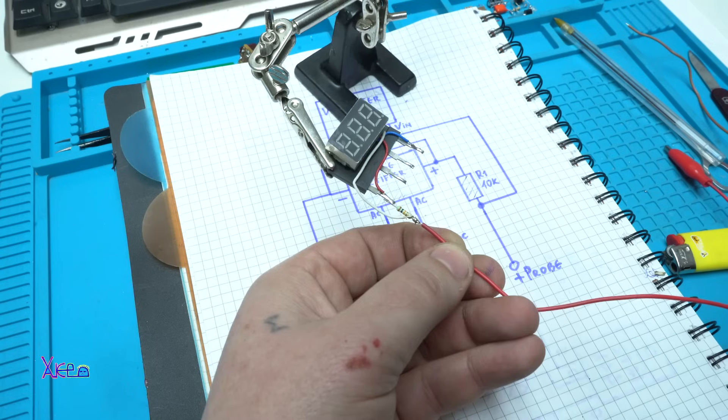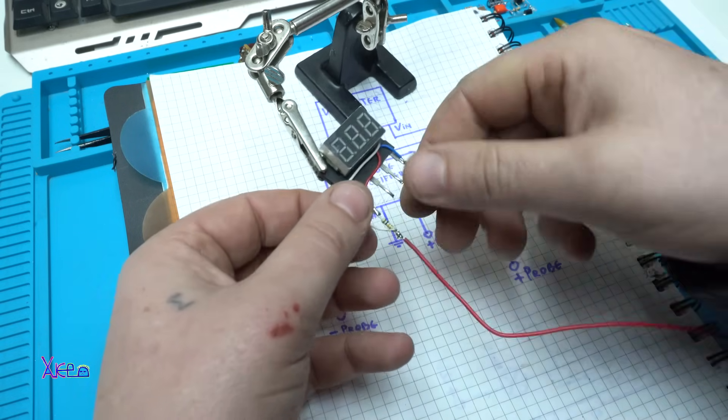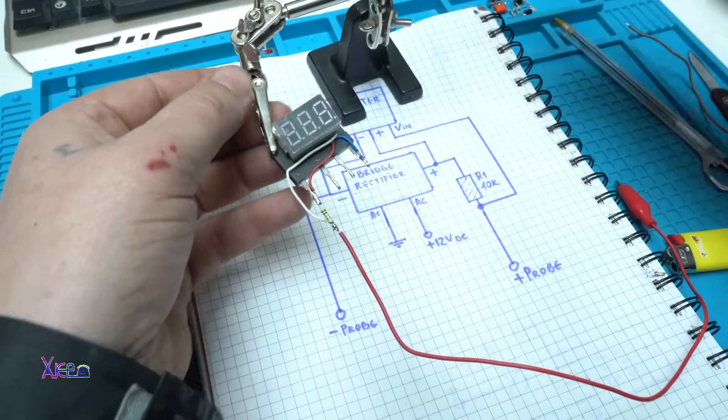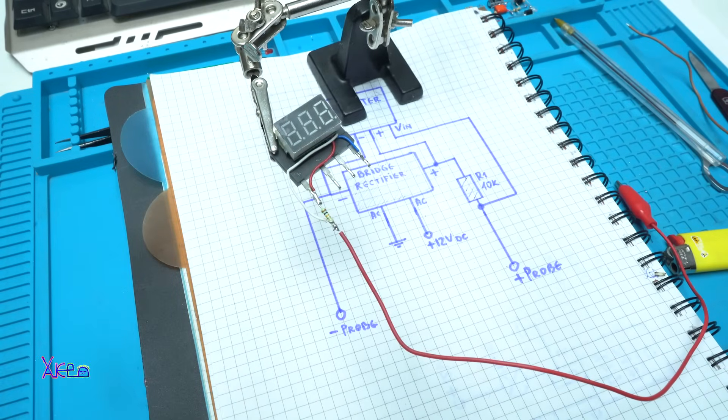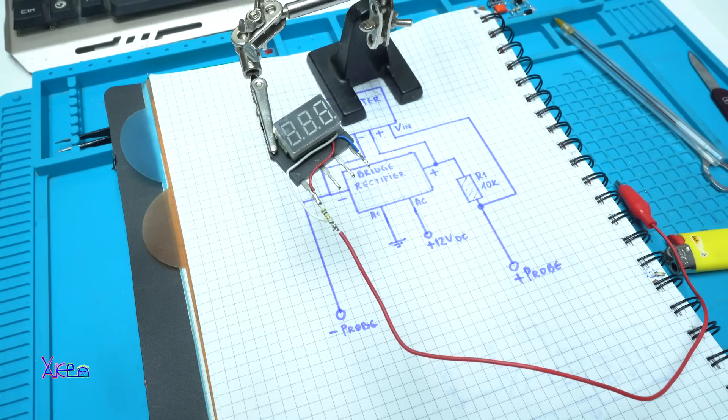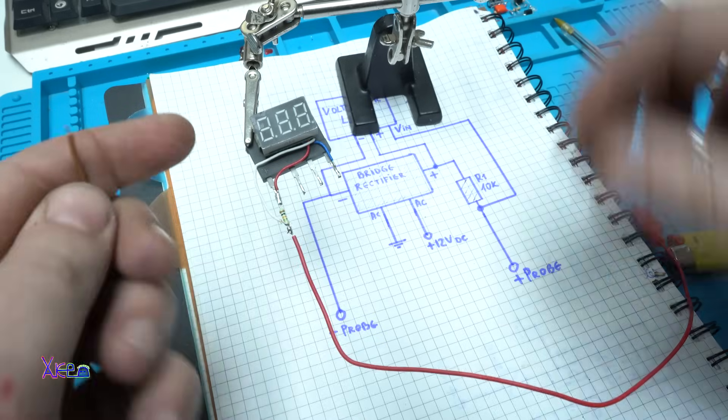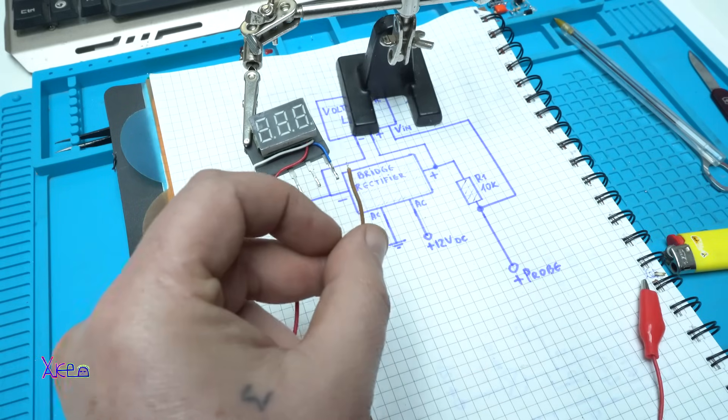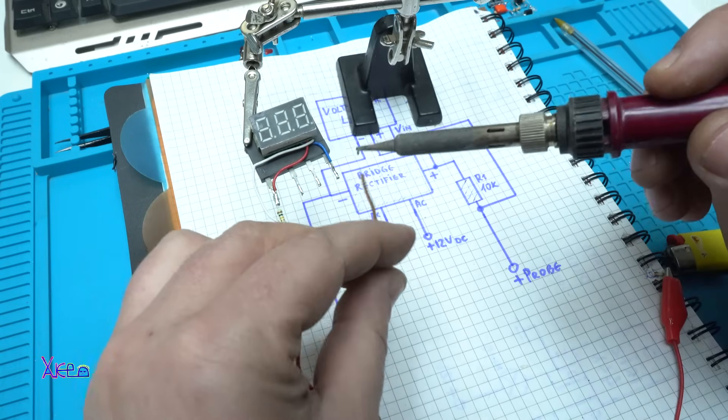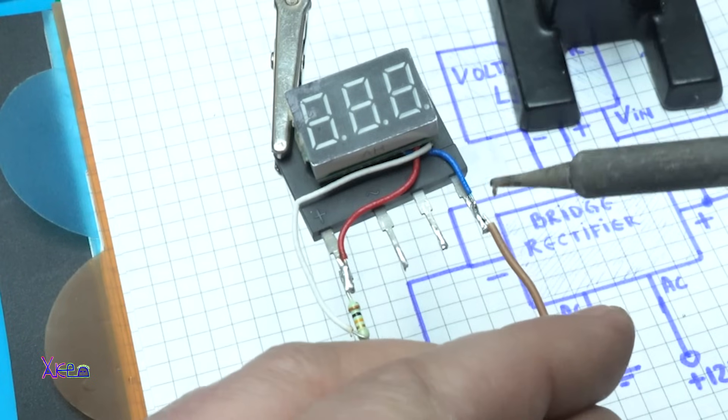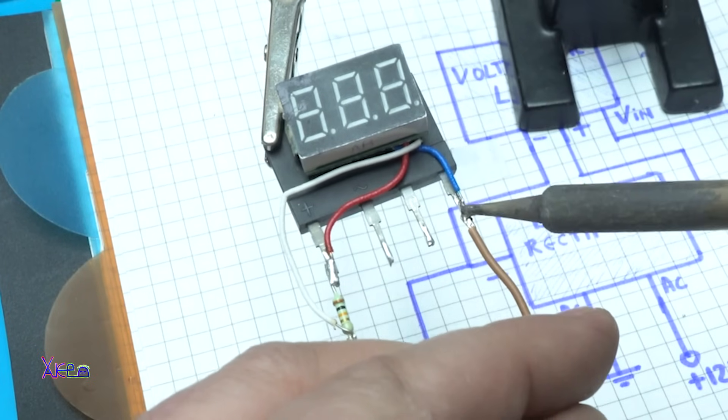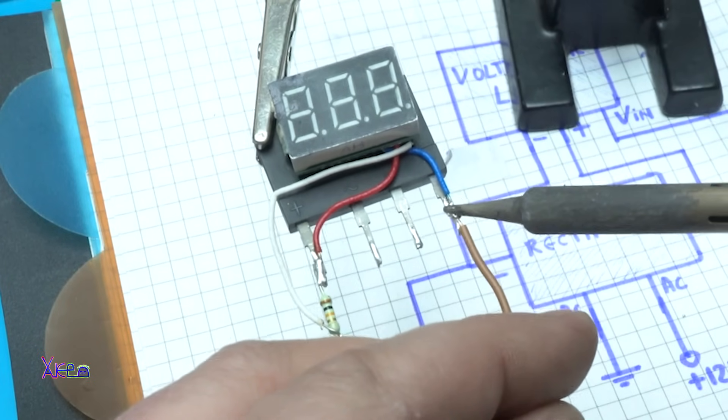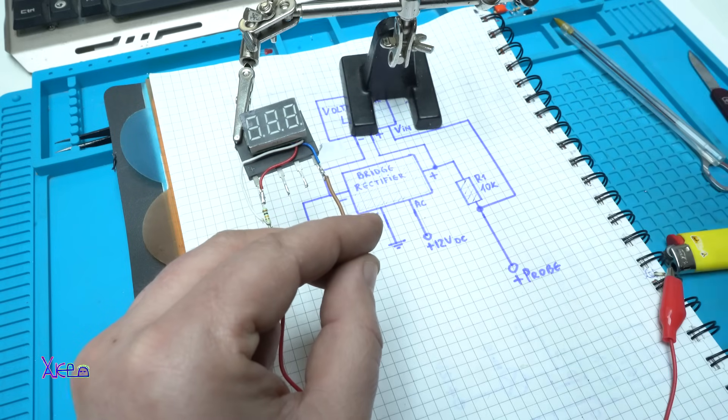Also on this point we're gonna solder the positive probe right here. All right. And the negative probe for measuring electronic components will go on ground or negative of the bridge rectifier.